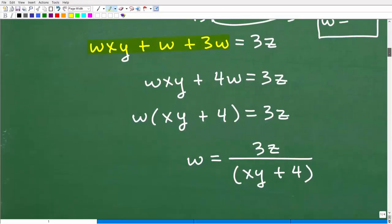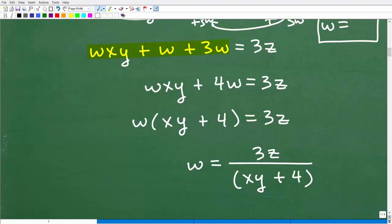Okay, so what are we doing from here? Well, we're looking to simplify anything we can simplify. And here I have 1w and I have 3w, so I can combine like terms. So this is 4w. So I have wxy plus 4w is equal to 3z. Okay, so we're getting closer.